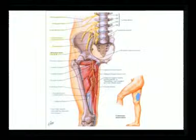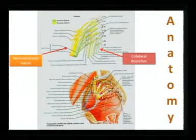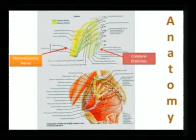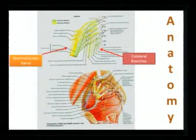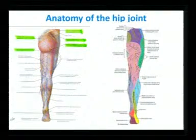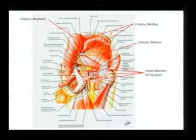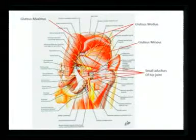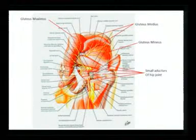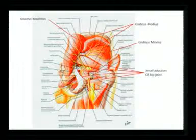The lumbar plexus supplies mainly the anterior side of the thigh or the hip joint, while the posterior side is supplied not only by the sciatic nerve but also by its collateral branches. The posterior aspect is supplied by the collateral branches and the cutaneous branches of the sacral plexus — the perineal nerves. The gluteus maximus, medius, and minimus are all supplied by the sacral plexus and the sciatic nerve.